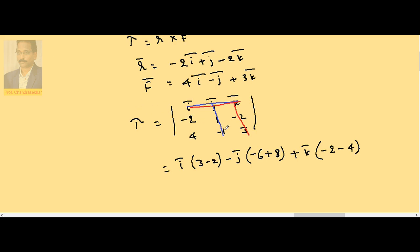This is -2 into -2, sorry, this is plus 2. So this becomes 3 minus 2, î. This is minus into minus, this is -6 plus 8, so 2, minus 2ĵ. This is 2 minus 4, -2k̂.